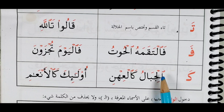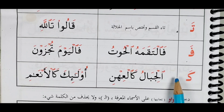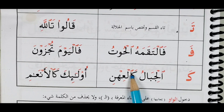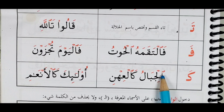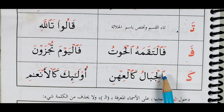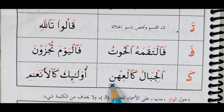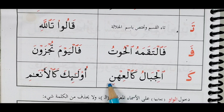Here the أل has a كاف before it, so you read from the كاف to the لام — you skip the skipping sign, there is an imaginary fatha, so we say: الجبال — كالعهن. الجبال — كالعهن.